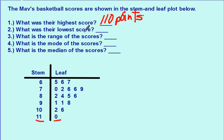What was their lowest score? So you want to look for the smallest leaf on the smallest stem. So 65 points is their lowest score.